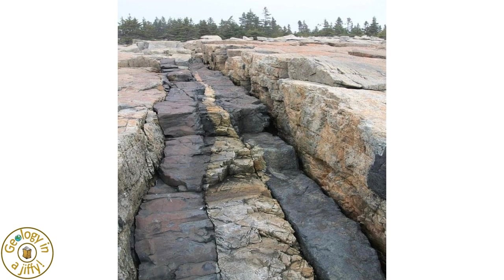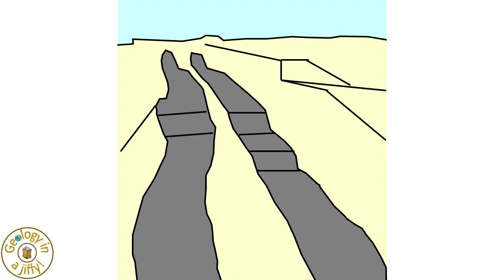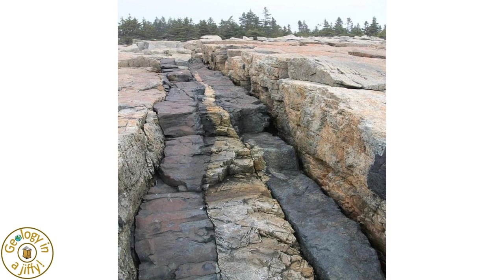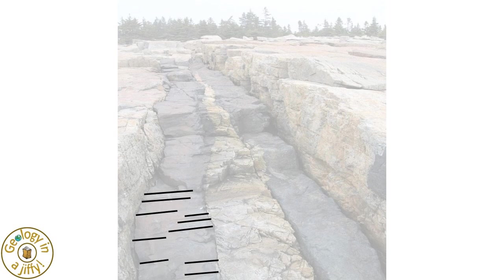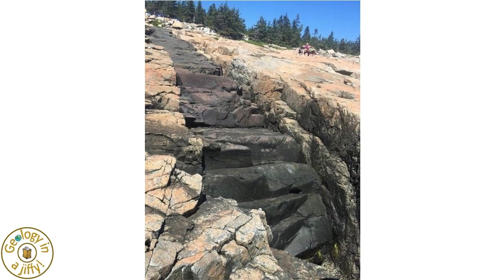These diabase or dolerite dikes in North East America were intruded into this paler coloured granite, the two near parallel dikes clearly displaying their sheet-like forms and their own chilled margins. If we look at this left-hand dike, we can see the columnar jointing — it's also very clear in this different view of one of the dikes.